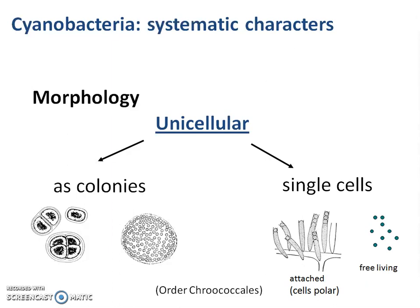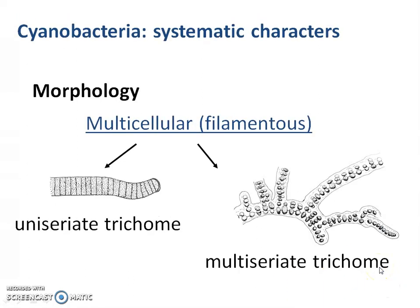Cyanobacteria morphological structures: some are unicellular, behaving as colony-like bacteria, like Chlorococcus. Some behave as single cells attached with a cell stalk, and free-living forms also exist. Some are multicellular filamentous — long thread-like cells attached to each other, known as trichomes, including uniseriate trichomes like this.